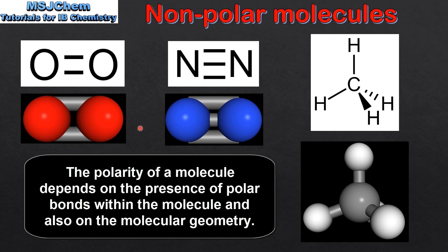Diatomic molecules such as O2 and N2 are composed of the same kind of atom bonded together. There is no difference in electronegativity between the two atoms, therefore they form a non-polar bond.